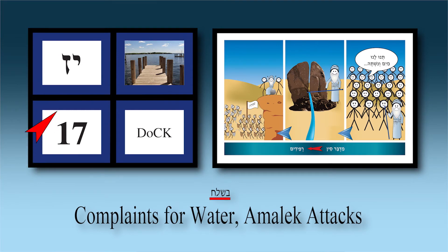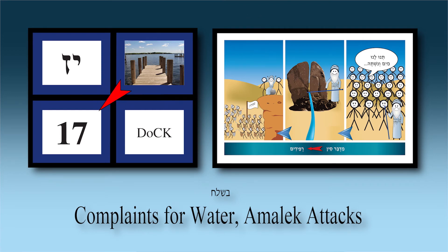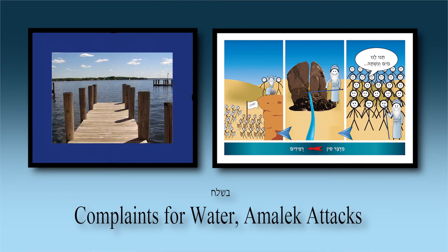Chapter seventeen — Parashat Beshalach, Perek Yud-Zayin. The simon is 'dock.' Three items: Klal Yisrael complain for water; Moshe hits the rock on the instruction of HaKadosh Baruch Hu and water comes spurting out — not to be confused with chapter 20 in Bamidbar where Moshe hits the rock again. And because we complained 'where is Hashem?', Amalek attacked Klal Yisrael. The funny story: imagine Klal Yisrael on a dock, complaining for water — which is ridiculous because there's water all around on a dock — and then Amalek comes out of the water and attacks. That's chapter seventeen dock.